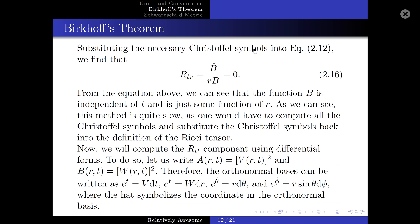Substituting the necessary Christoffel symbols into the equation for R-TR, we find that R-TR is equal to B-dot over rB, which equals zero. From this equation, we can see that the function B is independent of t and is just some function of r. This method is quite slow, as one would have to compute all the Christoffel symbols and substitute them back into the definition of the Ricci tensor.